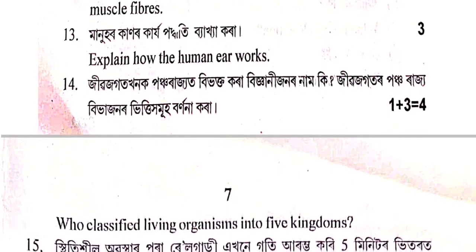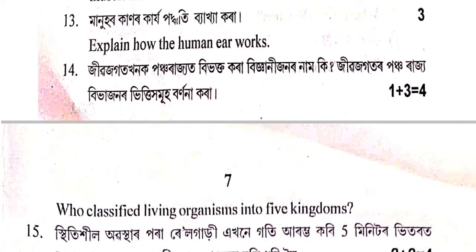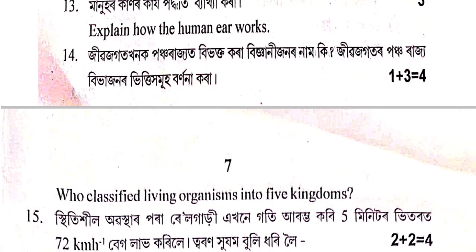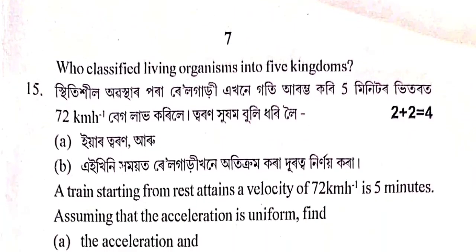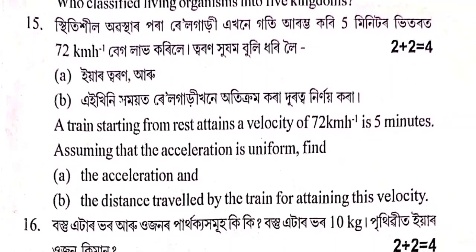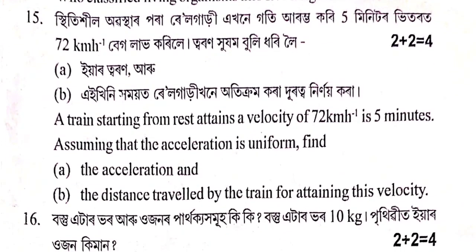Manohar kanor kajcha podhati vyakha kora — explain how the human ear works. Zivazagat khanak panchorajajat bivhakta kora — classify living organisms into five kingdoms. Vigyanishanar naam ki — who classified living organisms into five kingdoms, and describe their classification. City hill abastha-r paraya railgari ekhan gati arambha kori 5 minute-or vito rote 72 km pratih ghanthat bag laaf kori ele — a train starts from rest and attains a speed of 72 km/h in 5 minutes.